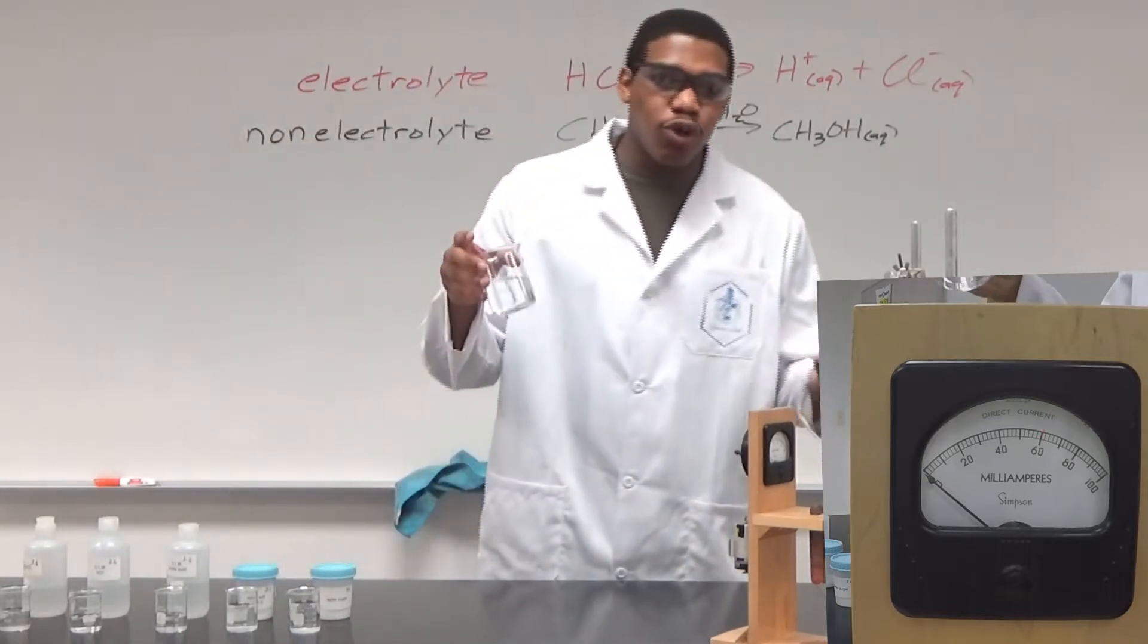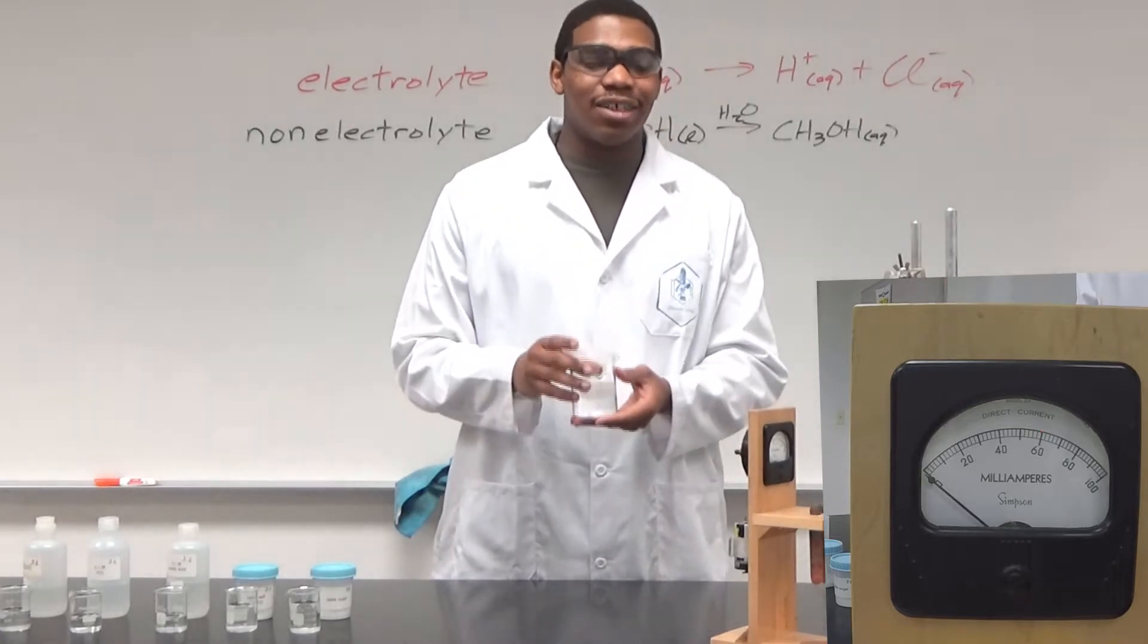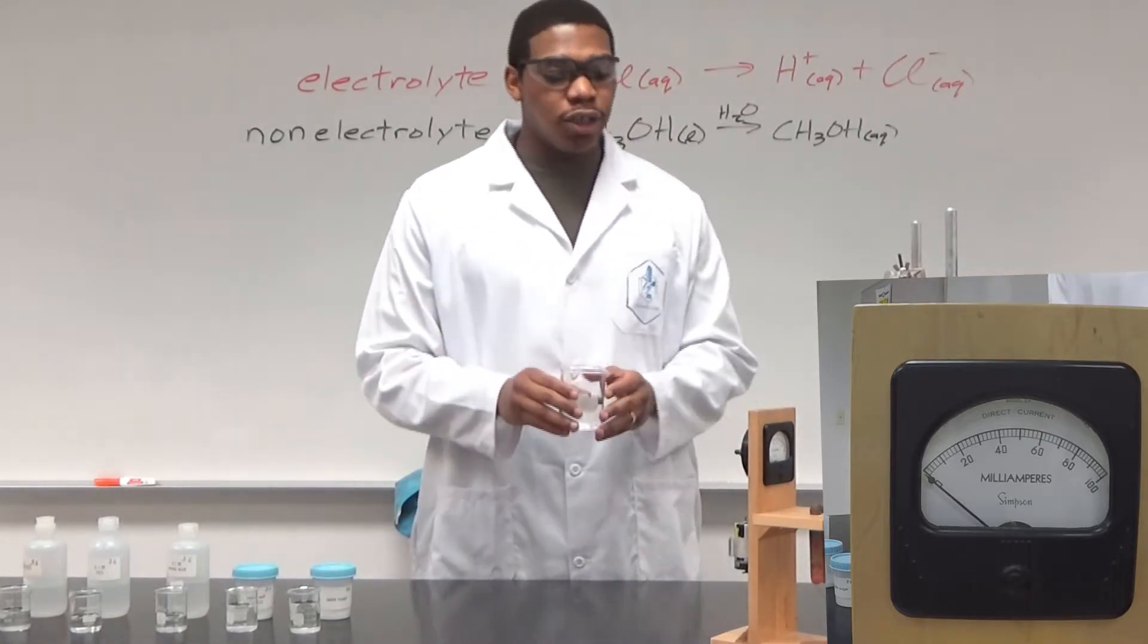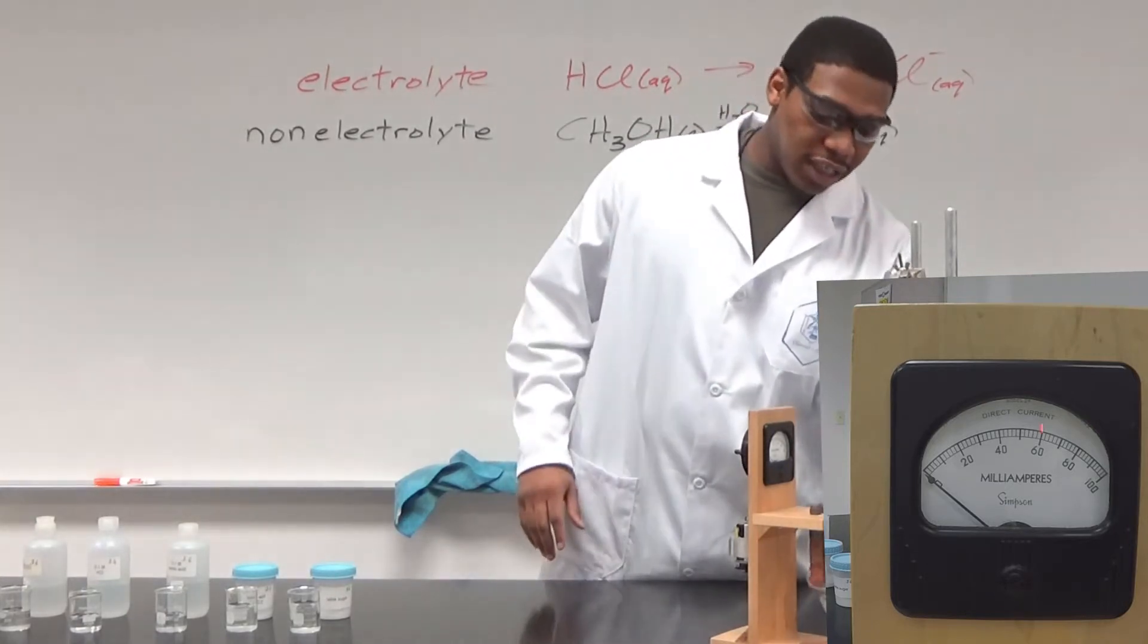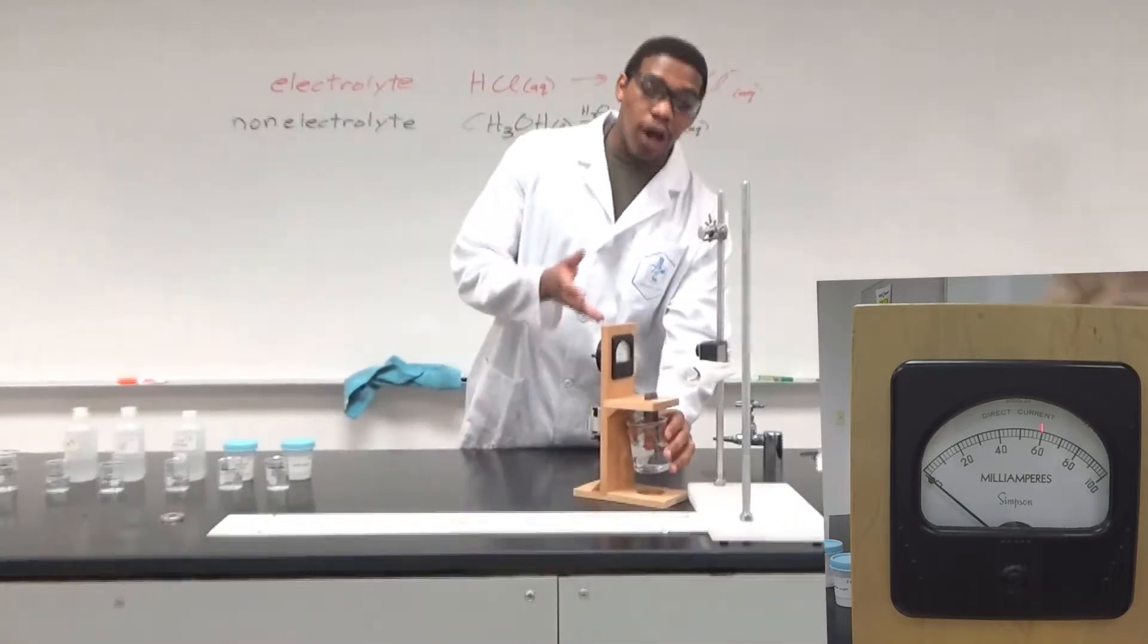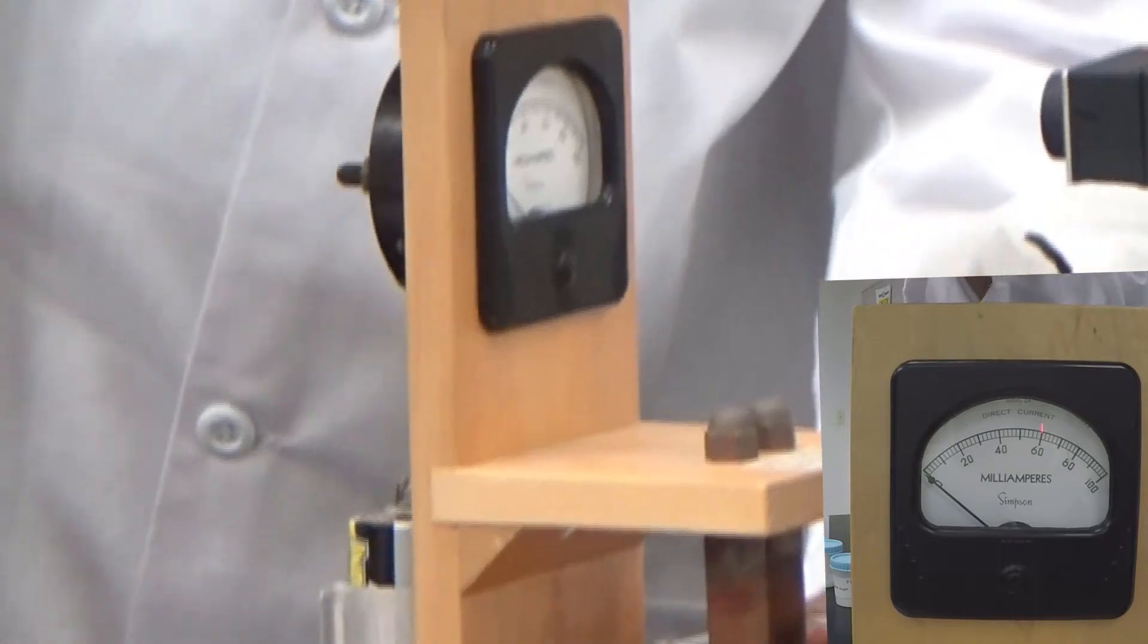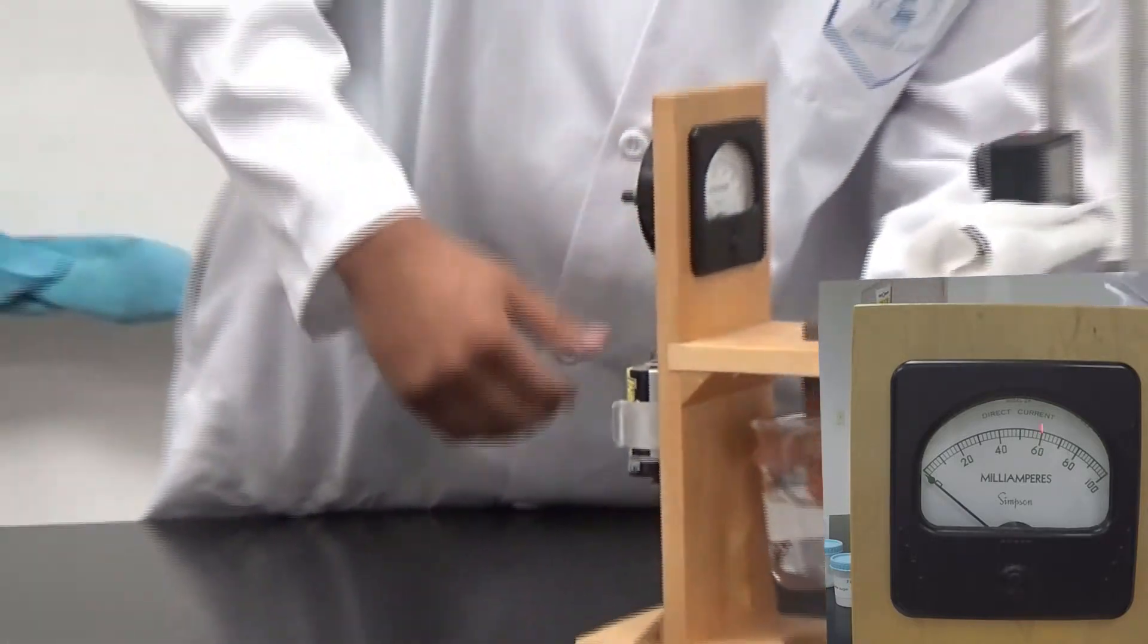We're going to start with normal DI water. There's not really any ions here - it's filtered water so we can maintain its pure H2O status. Let's put this water into this conductivity meter. On the top, what you should see in the camera is a meter that can let you know if the solution is conductive or not.